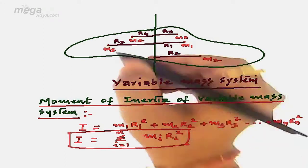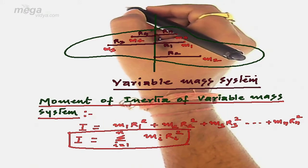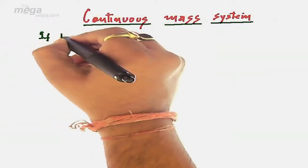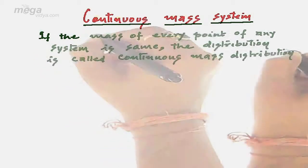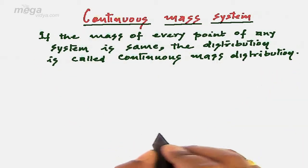Now let us know what is continuous mass system. If the mass at every point of the system remains the same, the distribution is called continuous mass distribution.